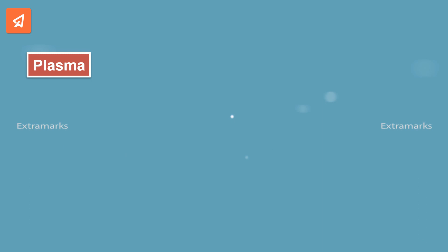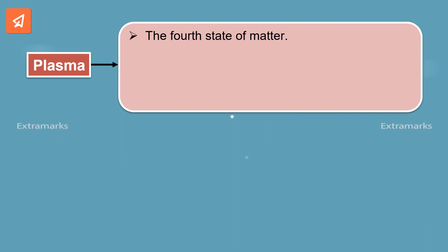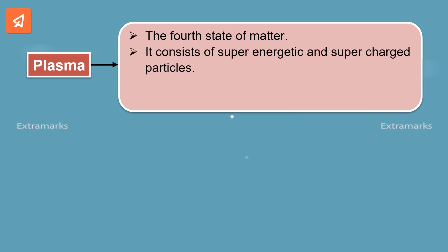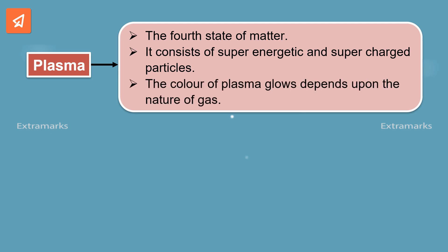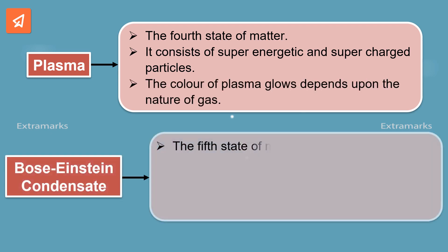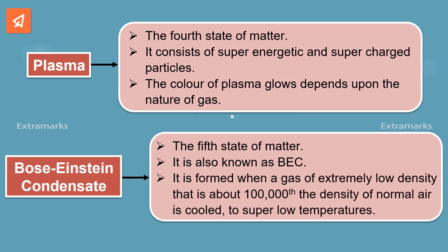Let us summarize what we have learned so far. Plasma is the fourth state of matter that consists of super-energetic and supercharged particles. The color of the plasma's glow depends upon the nature of the gas. The fifth state of matter is called Bose-Einstein condensate, also known as BEC. Bose-Einstein condensate is formed when a gas of extremely low density, that is about 100,000th the density of normal air, is cooled to super low temperatures.